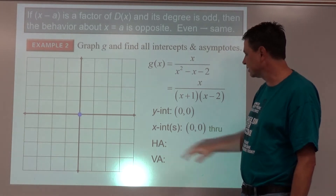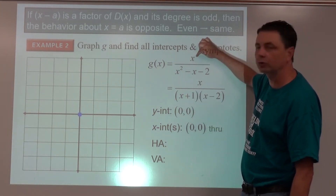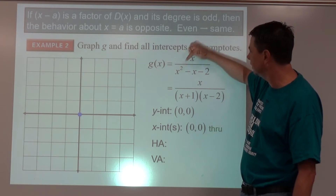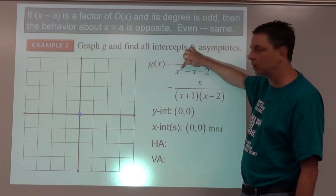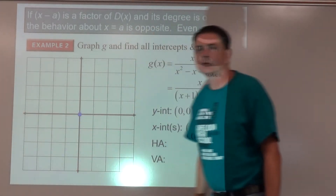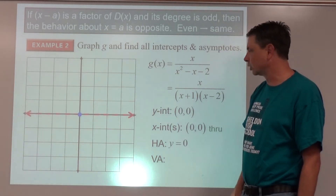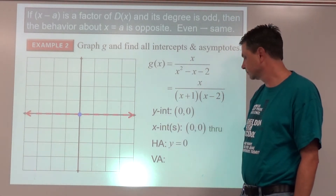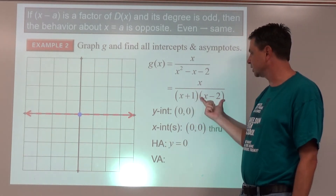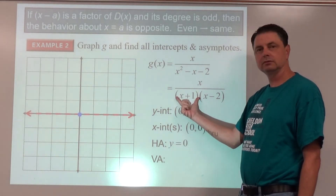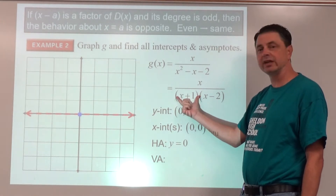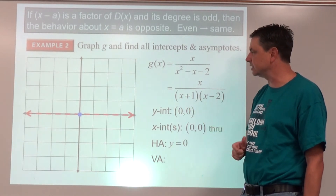For horizontal asymptotes, compare degree of numerator to degree of denominator — the numerator's degree is less, so y equals 0 is our horizontal asymptote. Vertical asymptotes come from the denominator set equal to zero and solved: x equals negative one and x equals positive two.